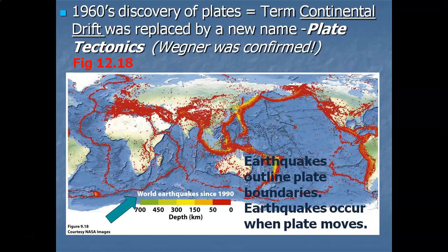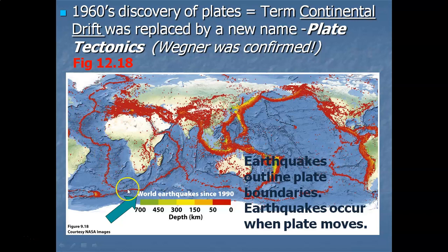It wasn't until the 1960s that modern technology allowed geologists to understand the details of the upper mantle — the asthenosphere, the lithosphere, and the details of the earth's crust. Simply by mapping the epicenters of all known earthquakes, geologists were able to outline all the major plates on earth. Now we know the asthenosphere's magma pushes up through plate boundaries causing them to move, and of course whenever they move there's an earthquake.